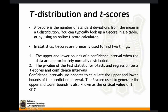Your T score is the number of standard deviations from the mean in a T distribution. You can look up a T score in a T table or by using an online T score calculator. For T score and confidence intervals, confidence intervals use T scores to calculate the upper and lower bounds of the prediction interval, also known as your critical value.